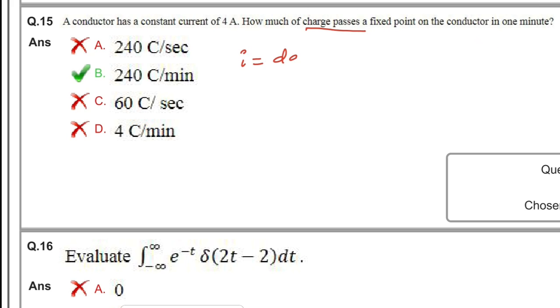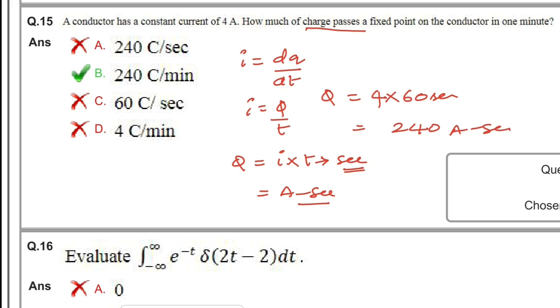The basic definition of current is i = dq/dt or i = q/t, so charge q = i × t. Current is 4 amperes, t is 1 minute = 60 seconds, so q = 4 × 60 = 240 ampere-seconds or 240 coulombs is the right answer.